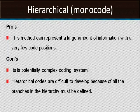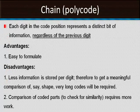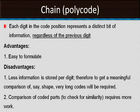In polycode structures, each digit in the code position represents a distinct bit of information regardless of the previous digit. The advantage is that it is easy to formulate. The disadvantage is that less information is stored per digit; therefore, to get a meaningful comparison of shape, very long codes are required, and comparison of coded parts requires more work.